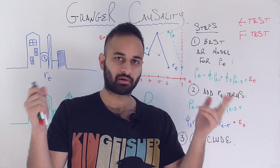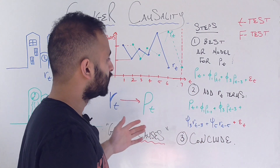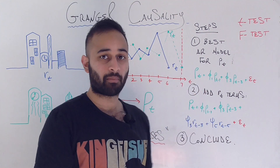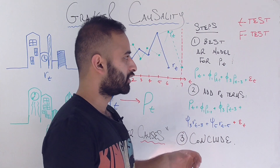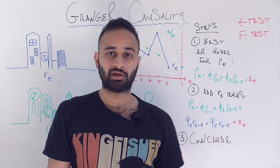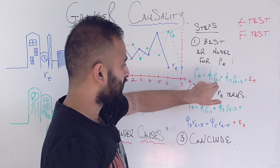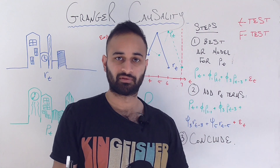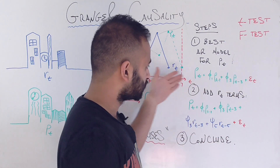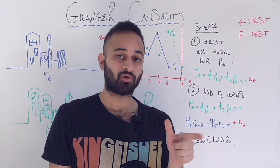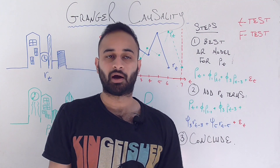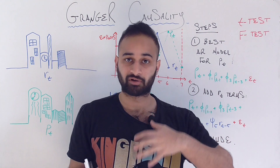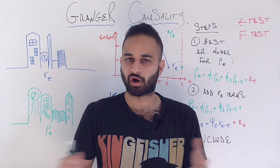Now let's look at a mathematical formulation for proving whether this is true, not just visually. Here are the steps. Step one: find the best AR or autoregressive model for P sub T, the poor city's export strategy. Using the PACF as a tool to identify the needed lags, let's say we find that P sub T equals φ₁·P sub T-1 plus φ₃·P sub T-3. So we use the first and third lags to predict the time series. This is our base model — we haven't brought in any information about the rich city yet, because we want to see how good we can get without incorporating additional information.